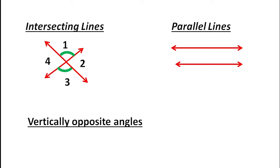Here I mark two angles — 1 and 3 — with green color. Their measures will be equal and they are called vertically opposite angles. For example, if the measure of angle 1 is 40 degrees, then the measure of angle 3 will also be 40 degrees.